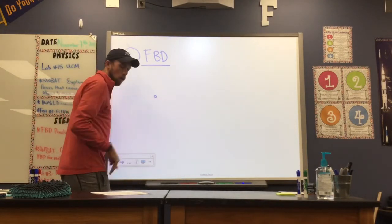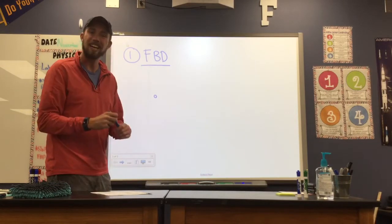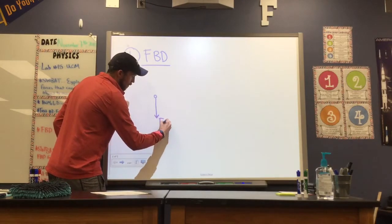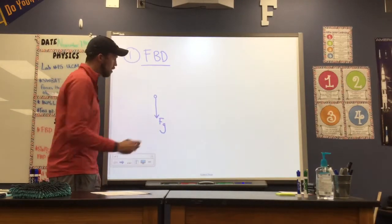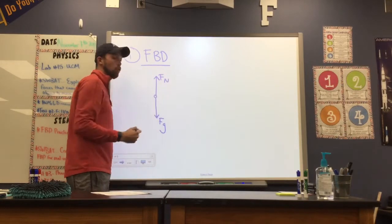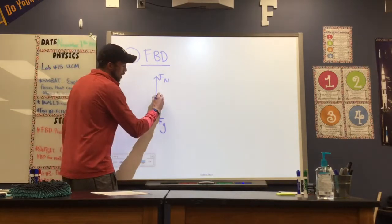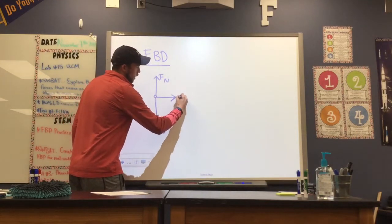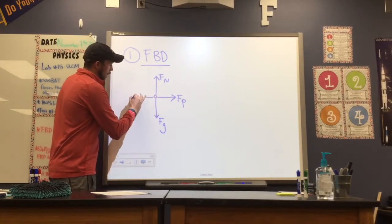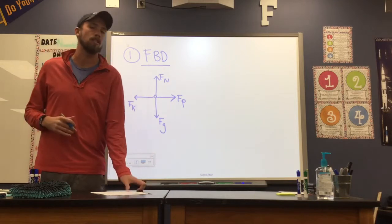So we're told a few things. We're told that we are pushing this block at a constant velocity, so there's probably a force of gravity pulling that block down. Because our block we can assume is in contact with the ground because it's experiencing friction, there's going to be a normal force. And then we also have the force we're applying, the push force, and our force of friction. We'll call this Fk, kinetic friction, because our box is moving.